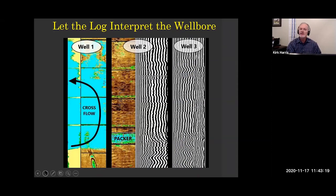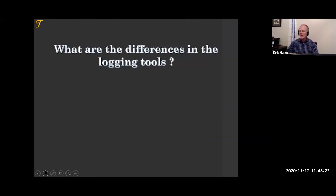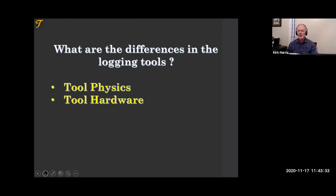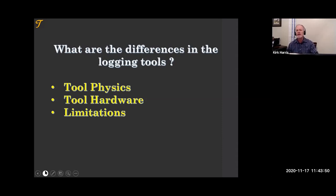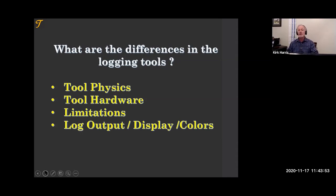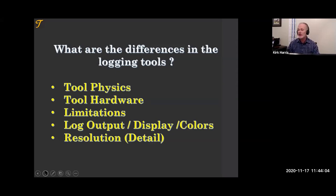We looked at this one last week. What are the differences in the logging tools? The physics are different for some tools. The hardware is different — we have different transducers, different modes of making that sound wave travel from transmitter to receiver. Each tool has different limitations based upon the physics and hardware. The log outputs are different — we use different colors, different lines, put different names on them. And the resolution is different: we see more detail in an ultrasonic log on a channel than from a radio log, for example.